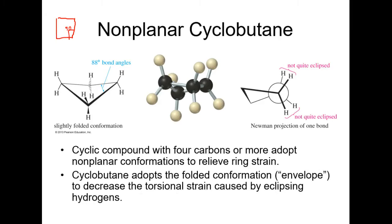The cyclic compound with four carbons can adopt this non-planar type of molecule, which alleviates some of the ring strain. They call it an envelope conformation because it kind of forms an envelope-looking structure, which gets rid of a little bit of the eclipsing interactions. In order to relieve ring strain, the bond angle should be higher than 90 degrees, closer to 109.5 — so that bond angle listed around 88 degrees seems off; I think it may be 98. I'll check and let you know.